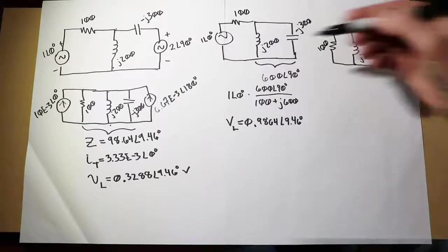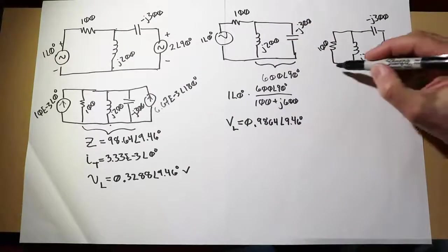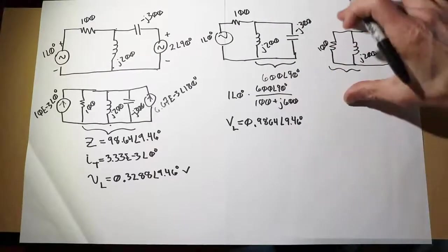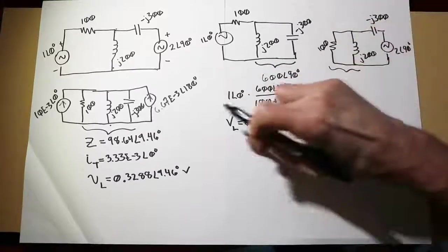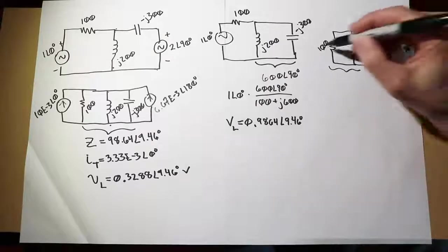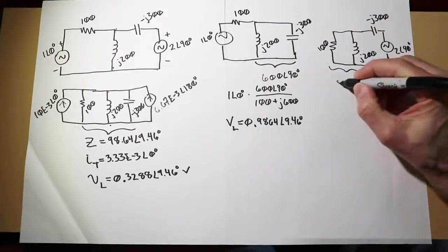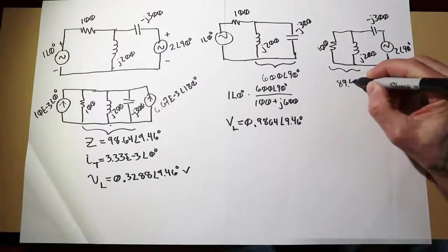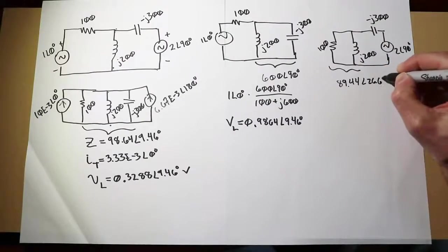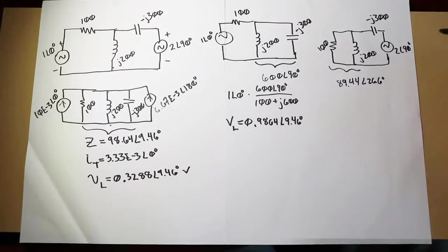We have a similar situation. If we can find this impedance, we can do a voltage divider once again. This impedance works out to 89.44 at an angle of 26.6 degrees. Again, that makes sort of intuitive sense.